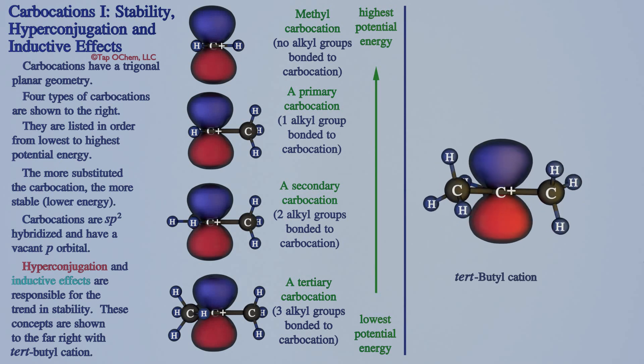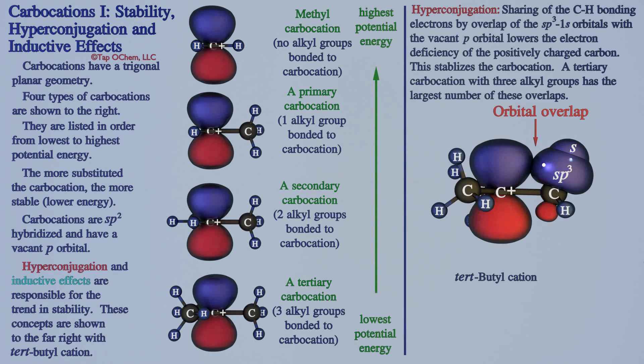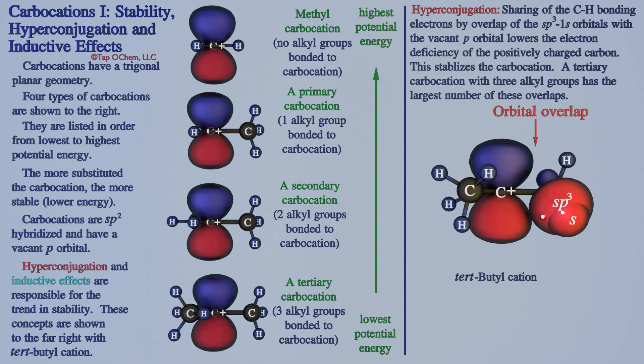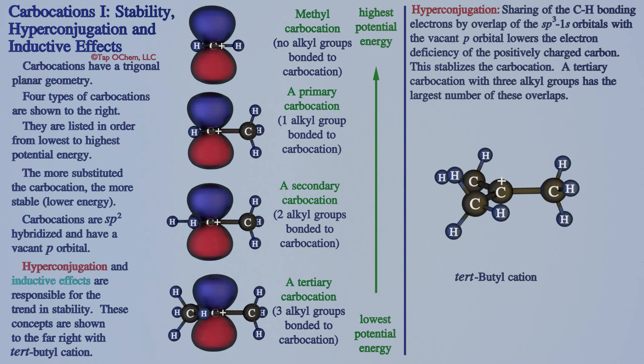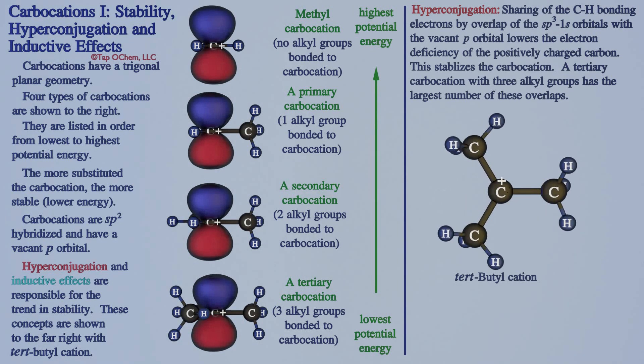The sharing of an electron pair from adjacent carbon-hydrogen bonds to the vacant p orbital is shown. Only one sharing example is depicted, but for the tertiary carbocation with three alkyl groups, all nine CH bonds can share electrons. The sharing of electrons allows the distribution of the positive charge over many atoms, thus lowering the energy of the molecule. This is called hyperconjugation.